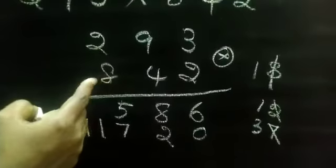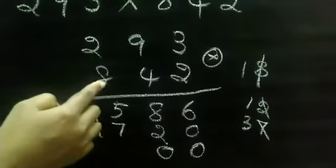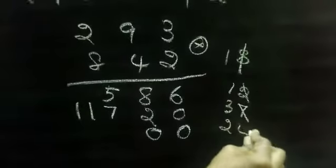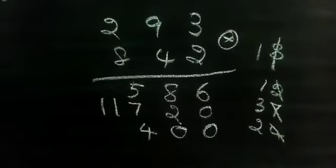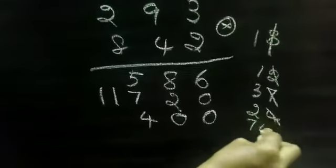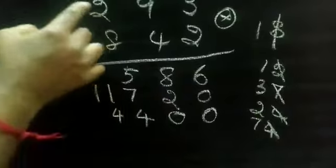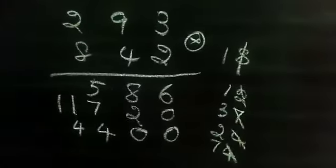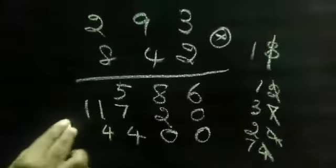So next we are going to multiply by 8. So here 1s digit, 10s place will be 0. So 8. 8 times 3 is 24. So 2 is carry over. 8 times 9 is 72. 72 plus 2, 74. So 7 is carry over. 8 times 2 is 16. 16 plus 7, 23. So 23.